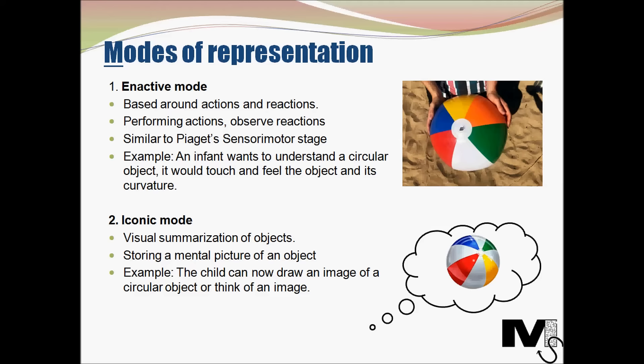If you are interested in learning more about Piaget's stages of development, please visit the tutorial on this topic in this channel. An example of the enactive mode would be if an infant wants to understand a circular object like a ball — it would actually touch, feel the object and its curvature, and can even put the object in its mouth. An example for an adult learner would be learning to type or to use a bicycle, where one would need to experience it directly.